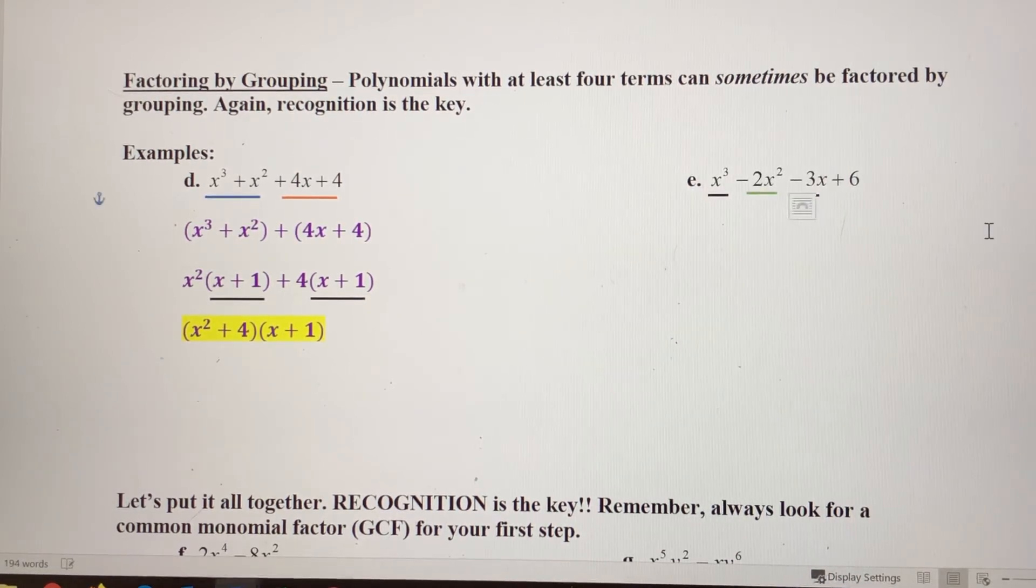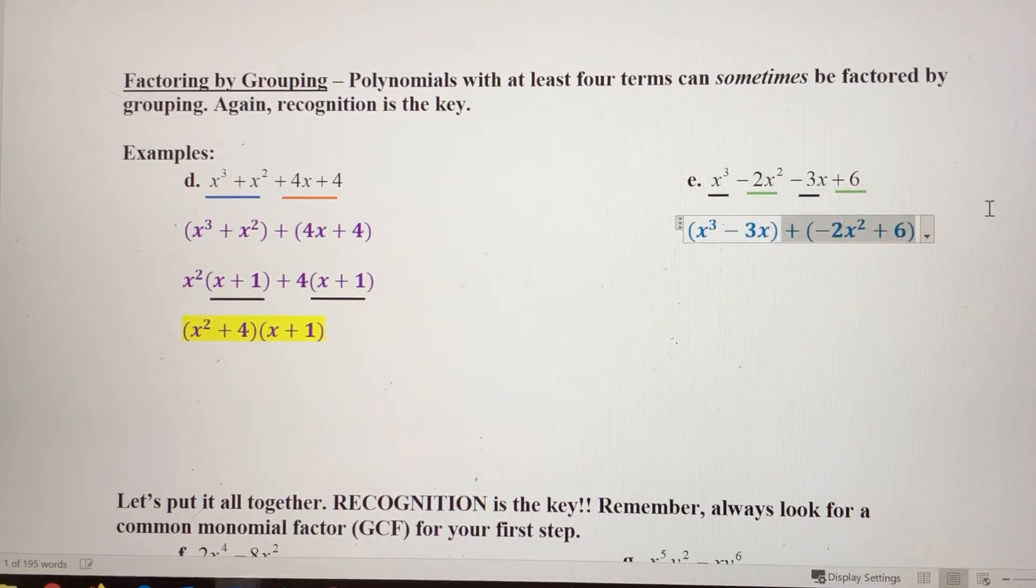Let's rewrite that so it's x cubed minus 3x plus negative 2x squared plus 6. All right, so let's factor each of these using a GCF. So I'm going to take an x out of this binomial. I'm left with x squared minus 3.